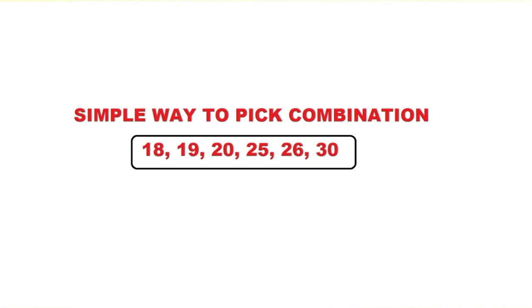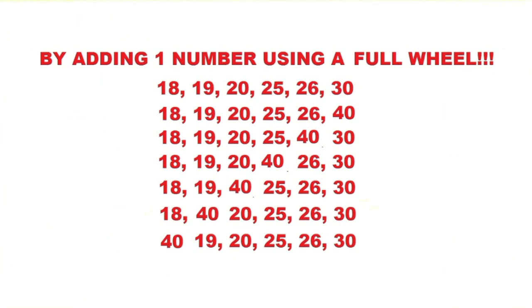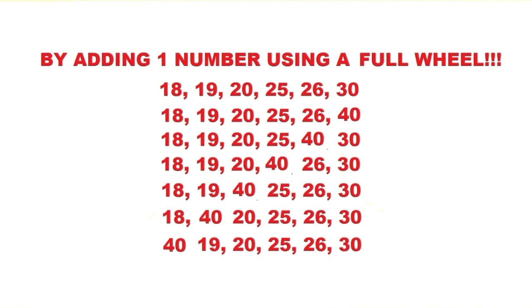Now we'll proceed by adding one number using a full wheel. This is a full wheel by adding one number. As you can see, we add 40 as our seventh number.